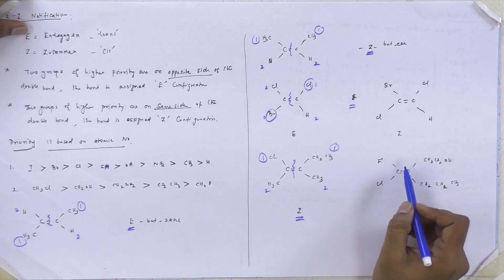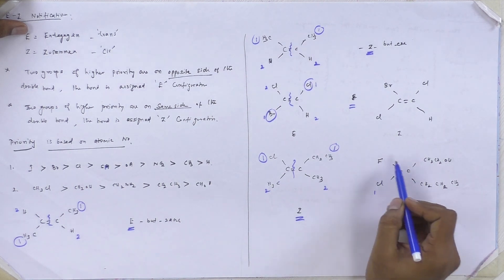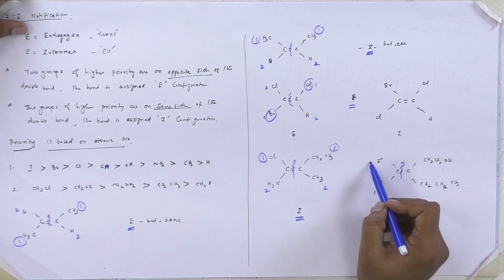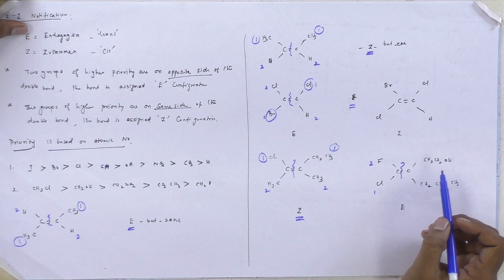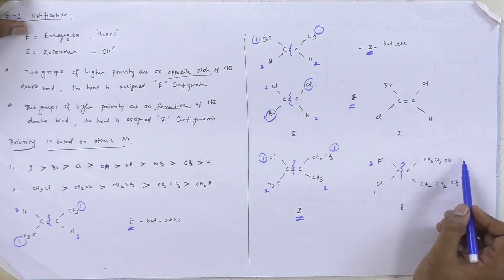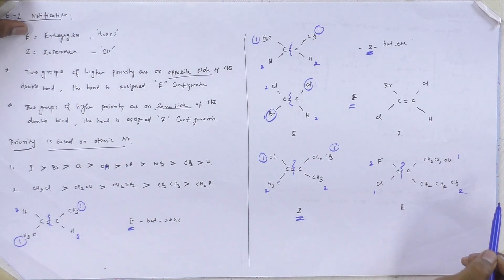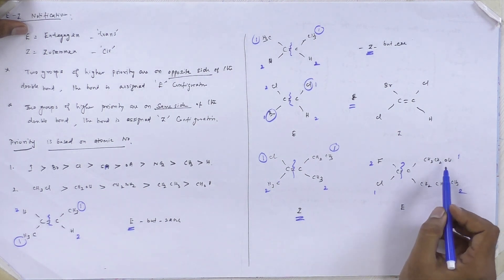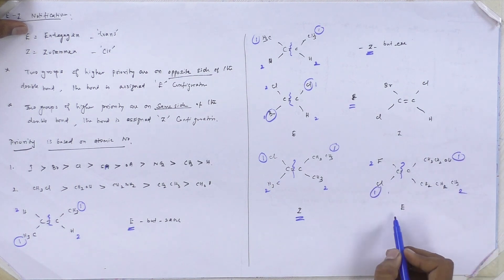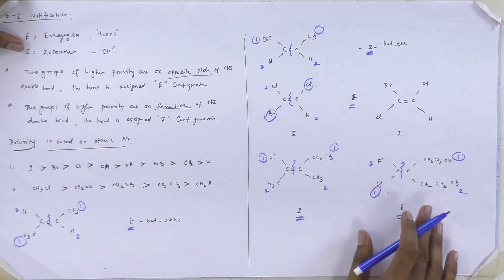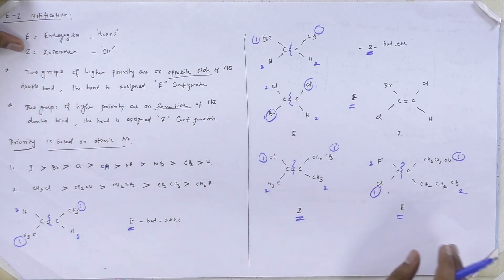Another example: chlorine is highest priority. We split into two parts. Chlorine is highest priority, next is fluorine. Similarly, on this side, this will be highest priority and this will be lowest priority. The highest priorities are on opposite sides, therefore this is E configuration. Are you able to understand? I think you have understood from these examples.